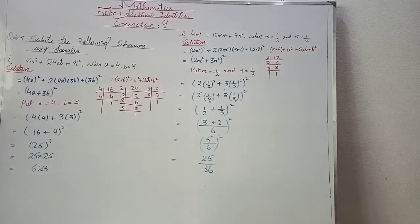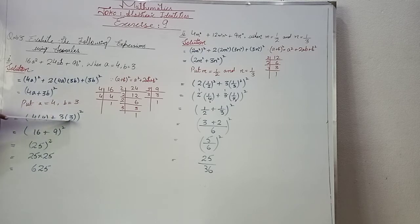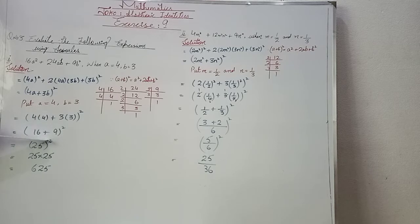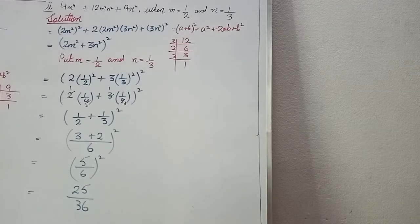Now substituting the given values a = 4 and b = 3: put a = 4 and b = 3 into (4a + 3b)². So we get (4×4 + 3×3)² = (16 + 9)² = 25². 25 squared means 25 × 25, which equals 625.